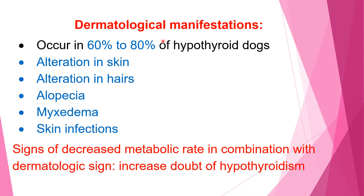Dermatological manifestations occur in 60 to 80% of hypothyroid dogs, making them very important. For ease of understanding, the dermatological signs have been grouped into several categories: alteration in the skin, alteration in the hairs, alopecia, myxedema, and skin infections. The symptoms in each group will be discussed in separate presentations.